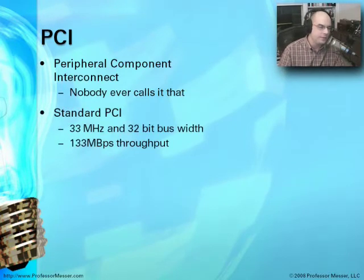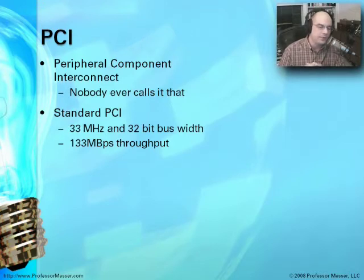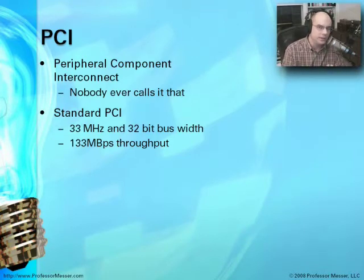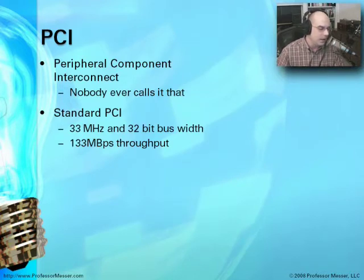There's a very early type of PCI called standard PCI that runs at 33 megahertz and 32-bit bus width. If you're wondering what these megahertz and bus widths are about, we have another video you can watch that talks about bus architectures and bus bandwidth. That would be a good reference if you need to go back and look at that. Standard PCI allows us to get 133 megabytes per second of throughput.